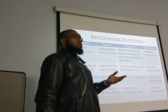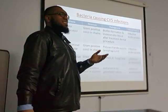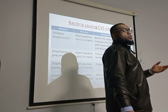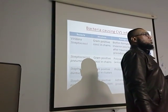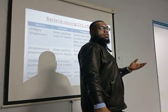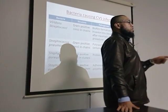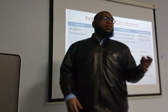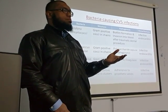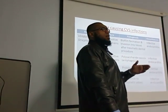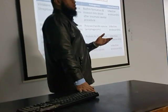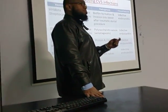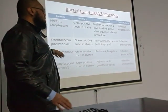Catalase breaks down hydrogen peroxide into water and oxygen. This enzyme differentiates staphylococci from streptococci. Within staphylococci you have two important species: Staphylococcus aureus and Staphylococcus epidermidis. Staphylococcus aureus is coagulase-positive — it produces the enzyme coagulase.